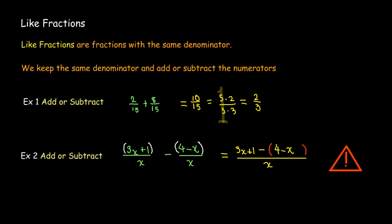Then we can distribute the minus sign. So I'll get a minus 4 and a plus x, and combine the like terms. And there's nothing that can be factored here, so no simplification is possible.